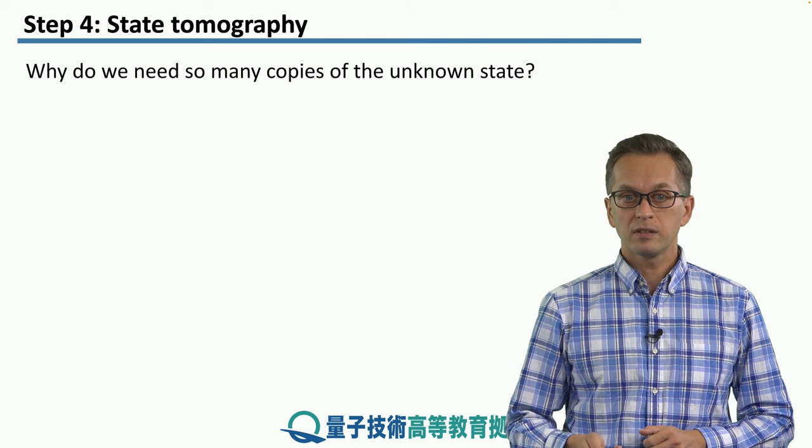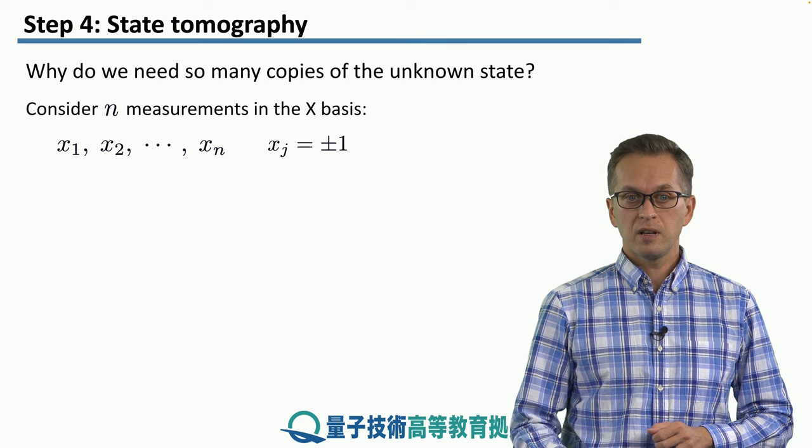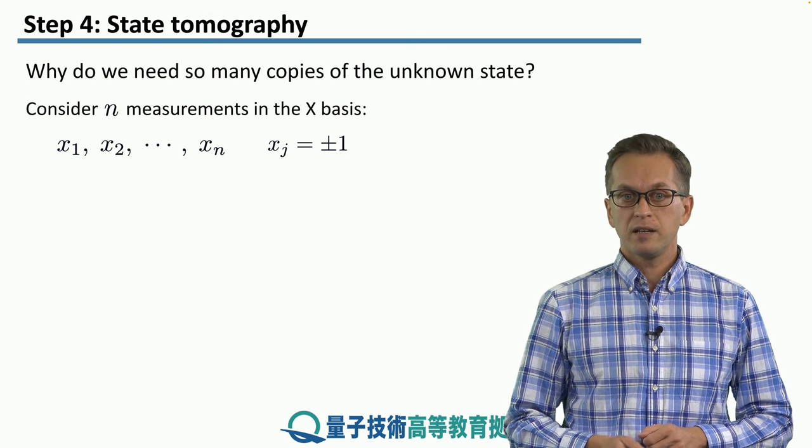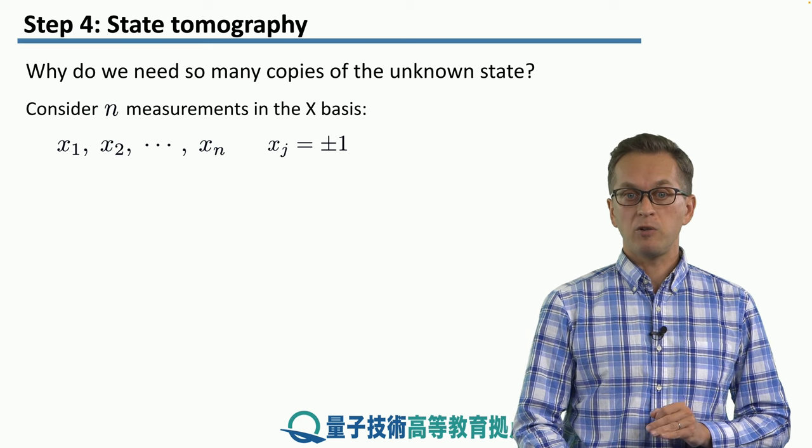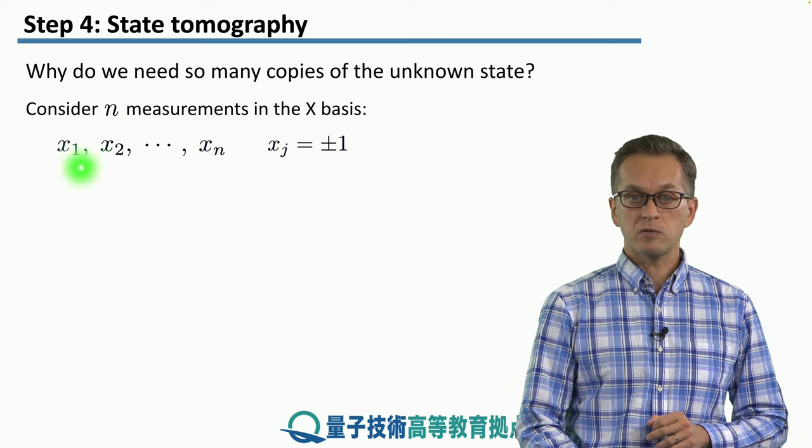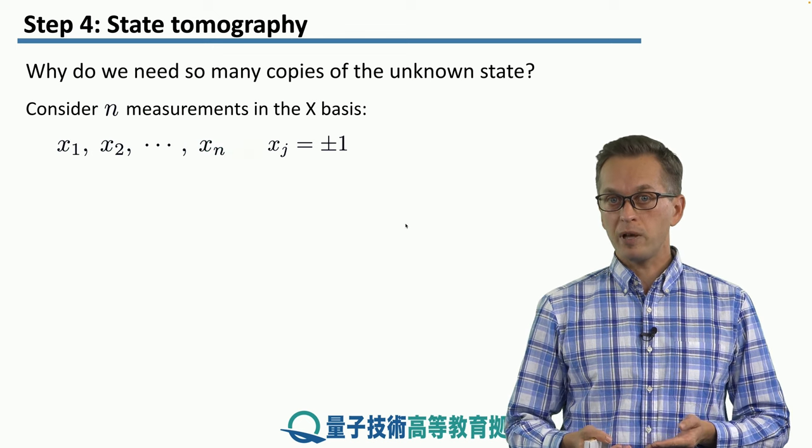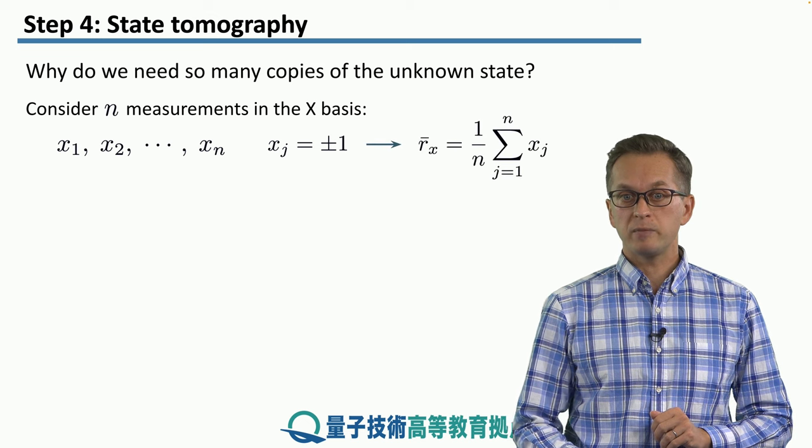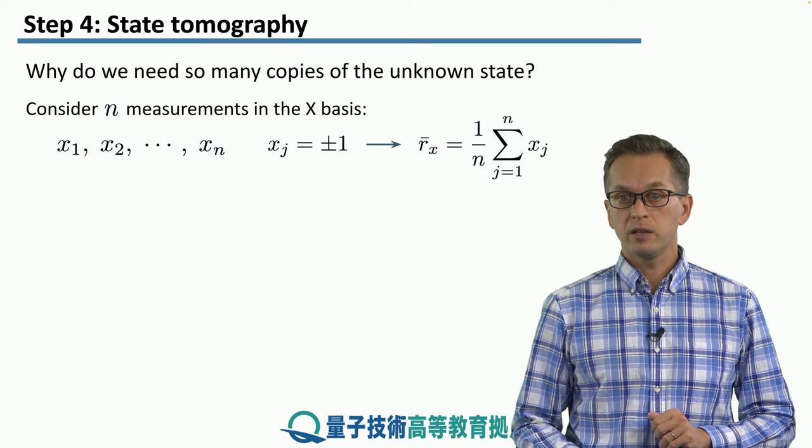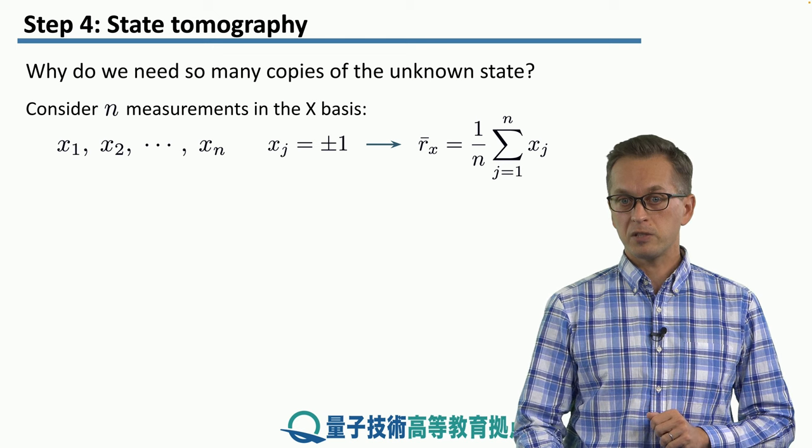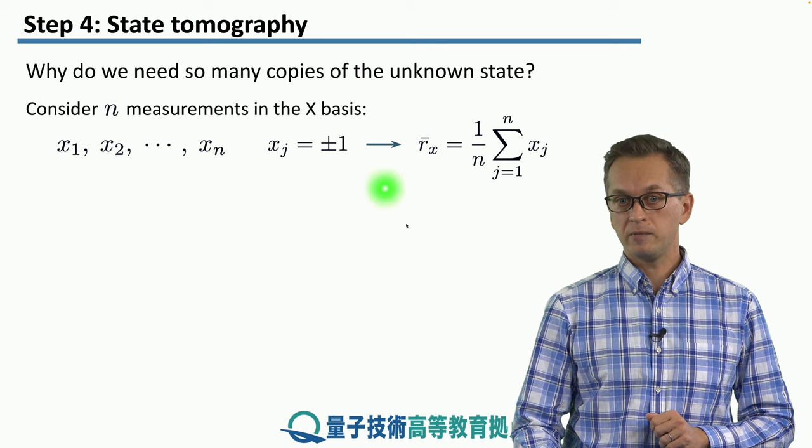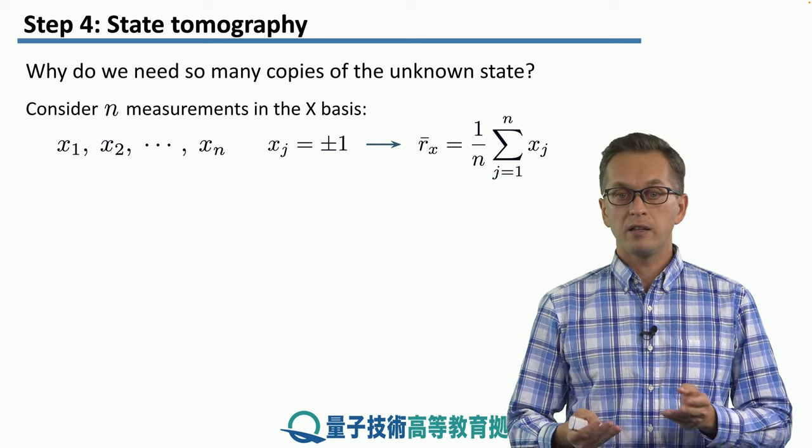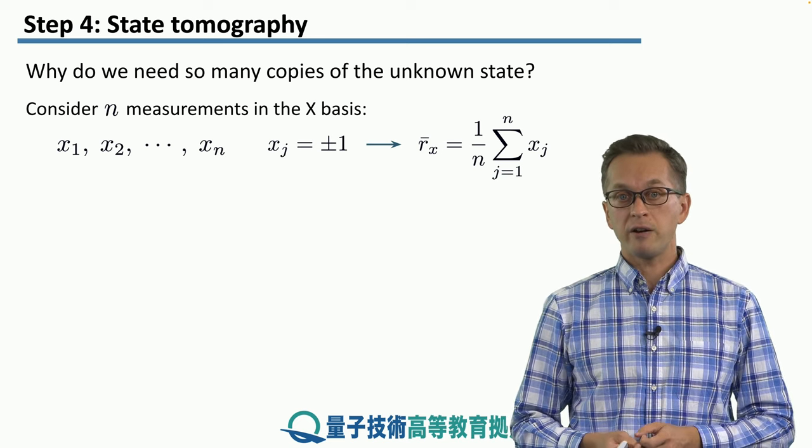So now, why do we need so many copies? Consider that we have n measurements in the X basis. What we get are n outcomes. And each of these outcomes, x₁, x₂, up to xₙ, is either equal to plus one or to minus one. From this, we can compute the estimate for the r̄ₓ, the x component of the Bloch vector. And that's just given by the arithmetic mean over here. For example, if half of them are equal to plus one, half of them are equal to minus one, then our estimate r̄ₓ is going to be equal to zero.